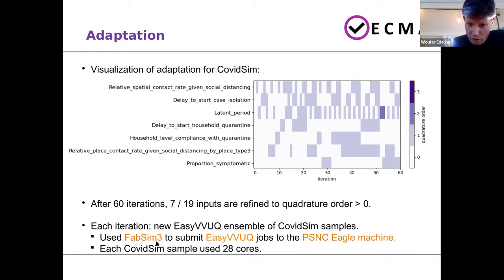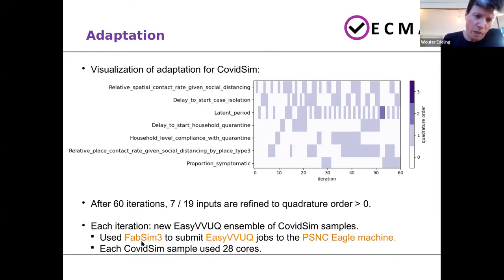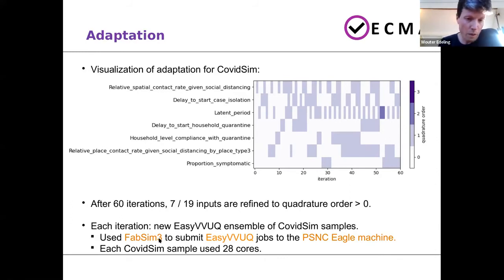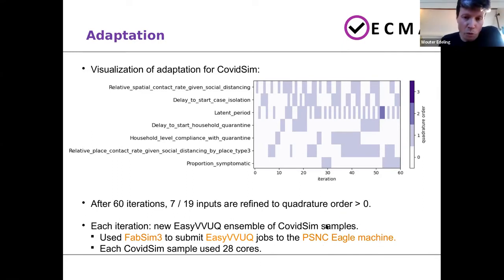The thing to remember is that COVIDSIM is not a cheap model — it uses 28 cores and finishes in about 10 to 15 minutes. It's not a massive application, but it's still not something you can run on your laptop. We used EasyVVUQ to do the sampling and to submit jobs to a supercomputer, we used FabSim3, one of the VECMA tools. We executed each ensemble on the Eagle machine in Poland.